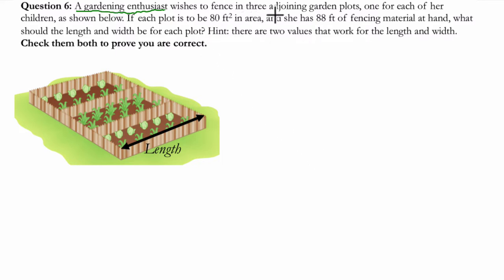And we want to fence in three adjoining garden plots. Well, look at my picture here. Here's a plot right here, here's a plot, and there's a plot. So they want to build a fence around those plots. And they want to do it for each of her children as shown below. So what do we know? We know each plot is to be 80 feet squared in area. All right, so each plot has a length and a width, and if we multiply the length by the width, we get 80 square feet.